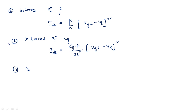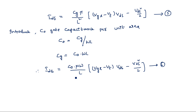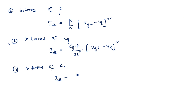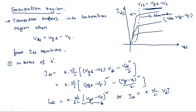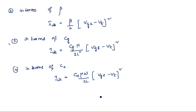And finally in terms of C_naught: IDS = C_naught · mu · (W/2L) · (VGS − VT)². So these four saturation-region equations — in terms of k, beta, CG, and C_naught — give the drain-to-source current in the saturation region.